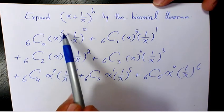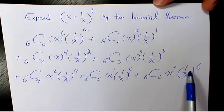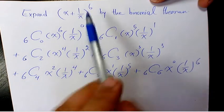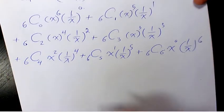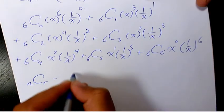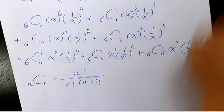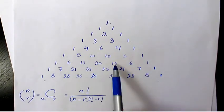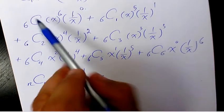As you can see, the exponent for the first term is decreasing: 6, 5, 4, 3, 2, 1, 0, and the exponent of 1/x is increasing: 0, 1, 2, 3, 4, 5, 6. The number of terms, since the index is 6, is supposed to be 7 — always one more. The coefficients from Pascal's triangle for this row are: 1, 6, 15, 20, 15, 6, 1.